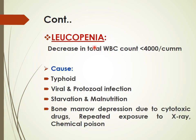If the total WBC count is decreased to less than 4,000 per cubic millimeter, it is known as leukopenia. The causes of leukopenia are typhoid, viral and protozoal infection, starvation and malnutrition, and bone marrow depression due to cytotoxic drugs, repeated exposure to X-ray, and chemical poisons.